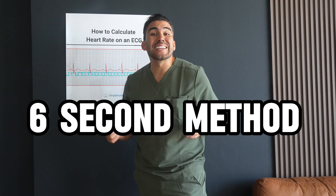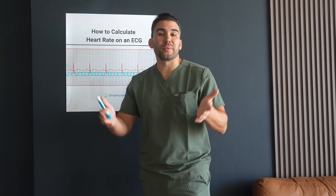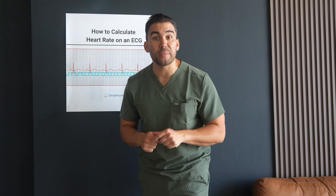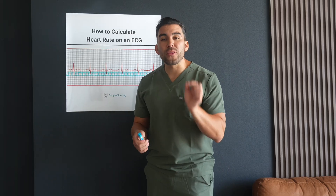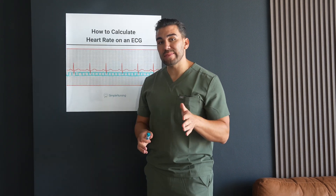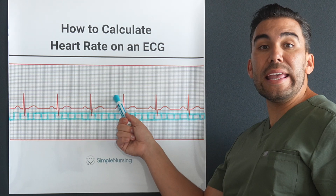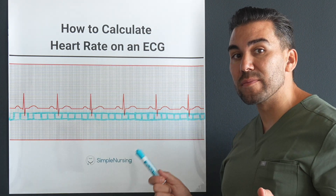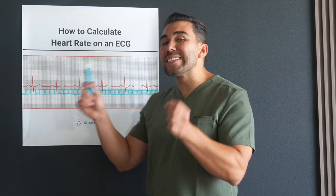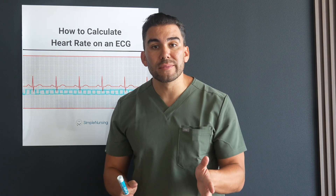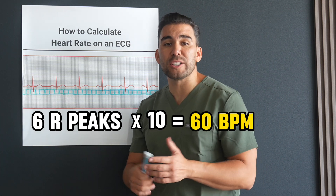Now let's move on to the six second method. This is especially useful for irregular rhythms like atrial fibrillation or sinus arrhythmia. You can see here that there are 30 big squares — 30 big squares equals six seconds. You simply count the number of R peaks in those 30 big squares and multiply that number by 10. For example, if you count six R waves, you take six times 10, which is 60 beats per minute.